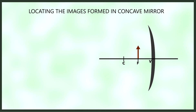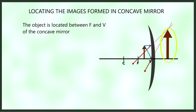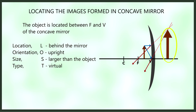Lastly, we place the object very near the mirror — between F and the vertex. Using the PF ray and V ray, the reflected rays do not meet and are not parallel to each other. We extend them to find their meeting point. The image is found behind the mirror, upright, larger than the object, and a virtual image since we had to extend the reflected rays.